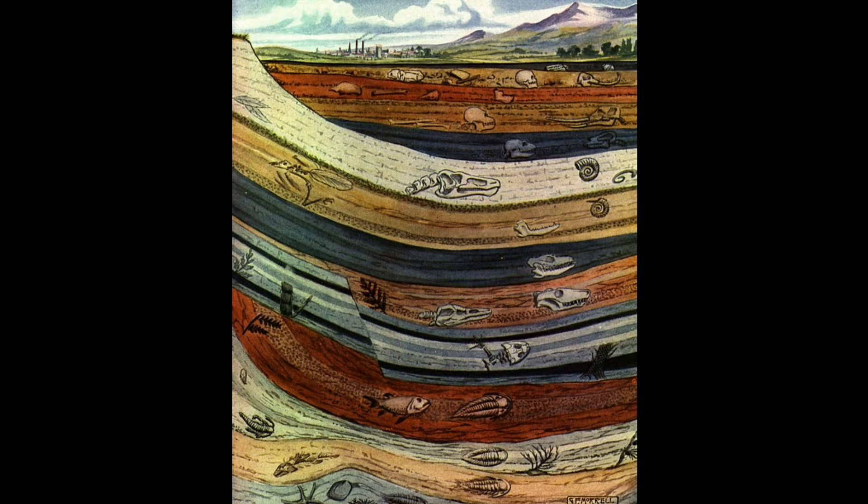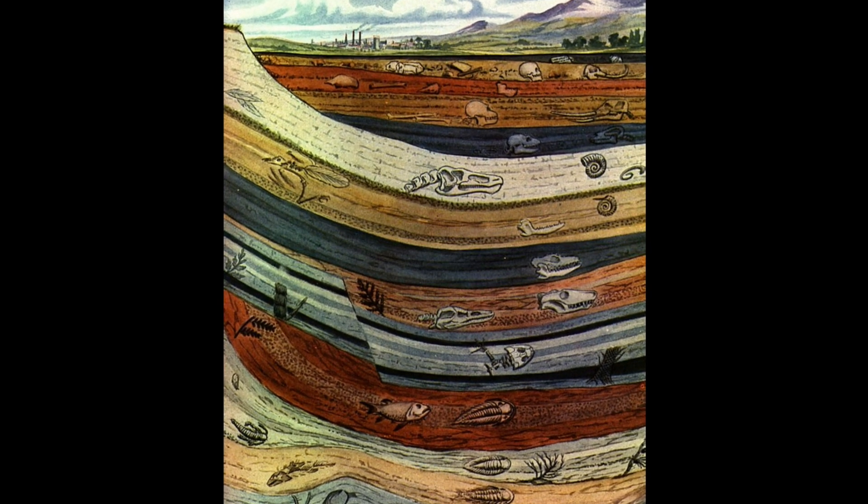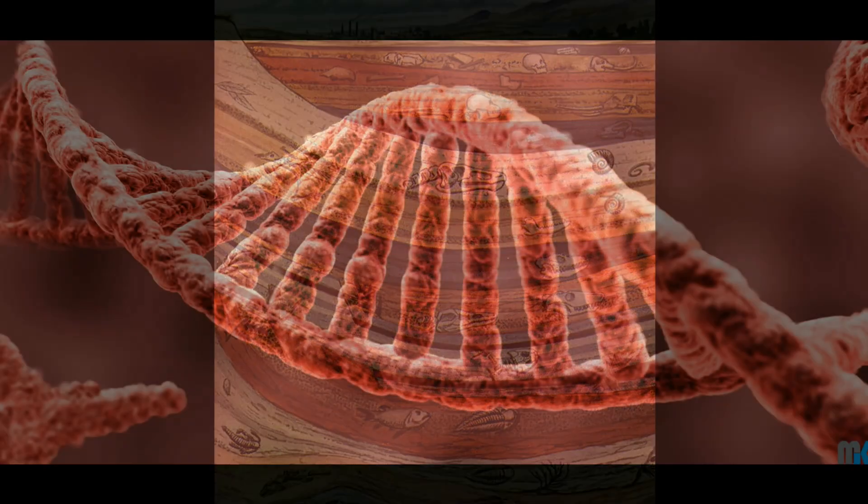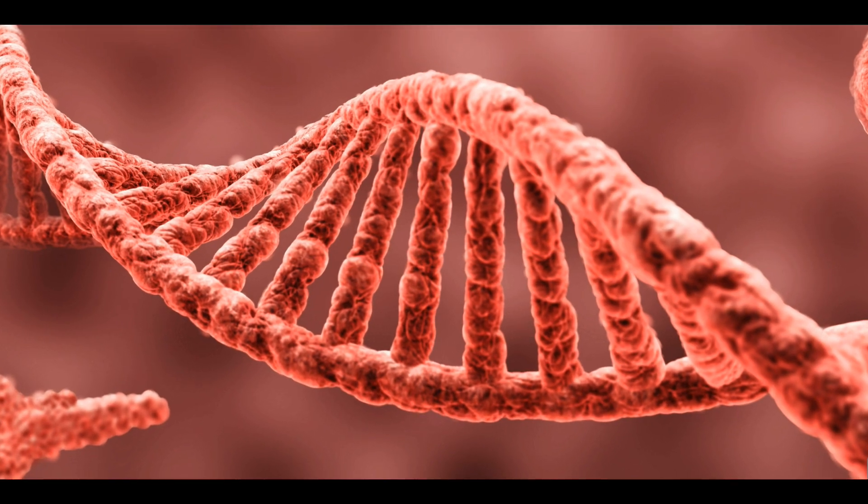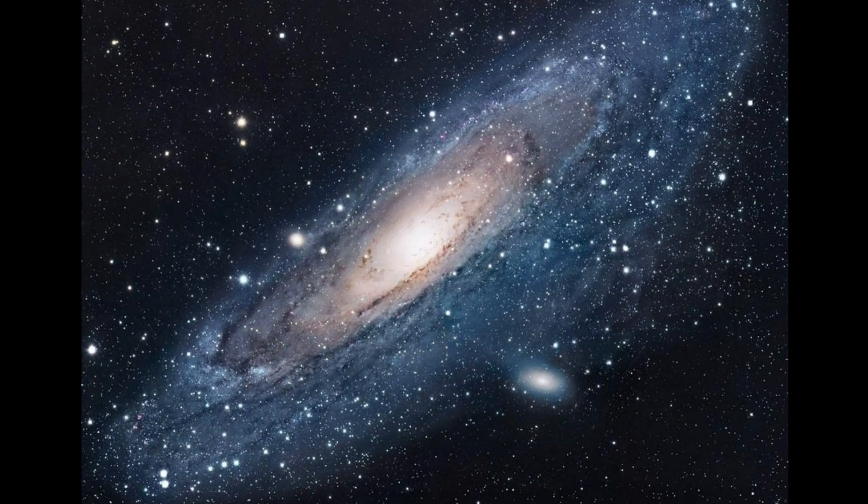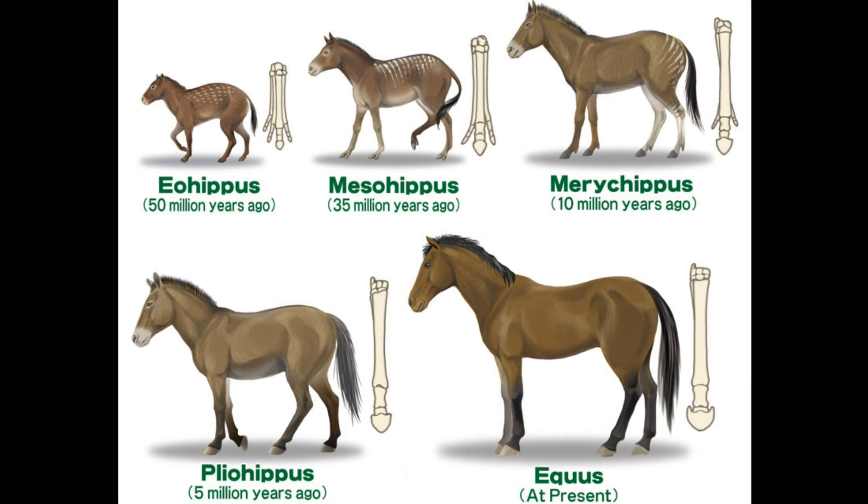Examples include fossils in undisturbed geological layers being ordered by lineage, all known life being based on DNA, the Earth and universe being billions of years old, and that species evolve.